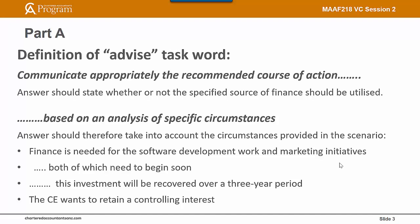Looking at the four different sources of finance against those circumstances: we need the finance pretty quickly, which probably rules out the IPO as well as venture capital. The next requirement is that it will be recovered over a three-year period — not permanent funding, which is what an IPO or venture capital would represent. And the chief executive wants to retain a controlling interest. These are the circumstances to take into account when answering the question.